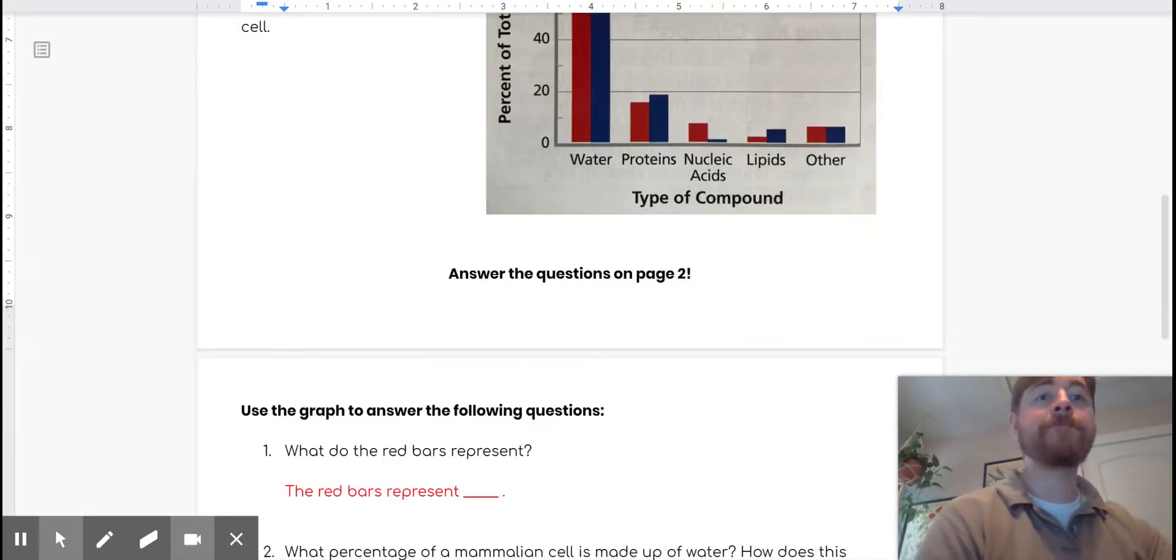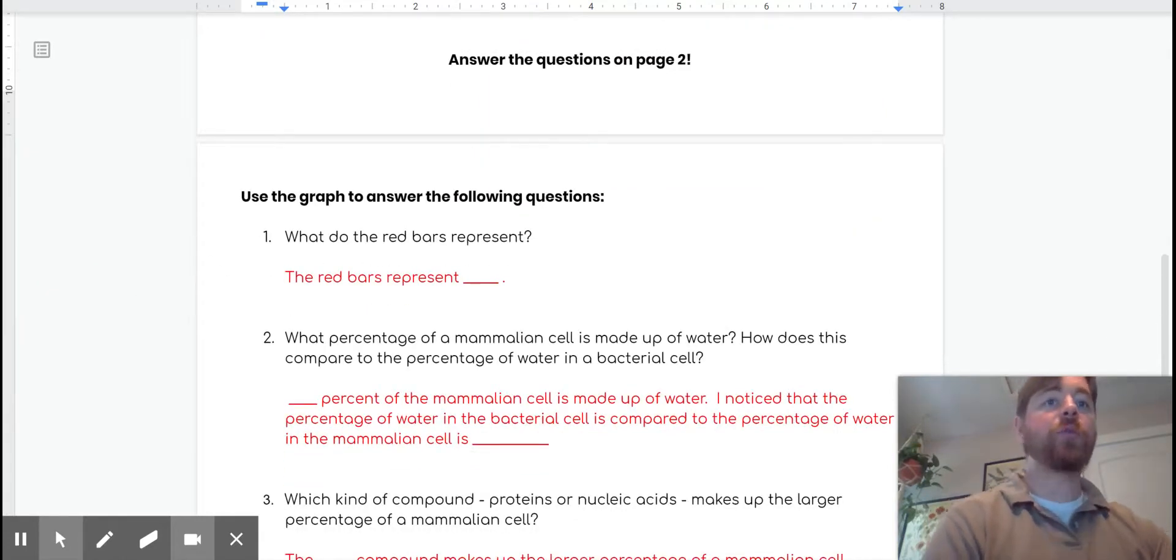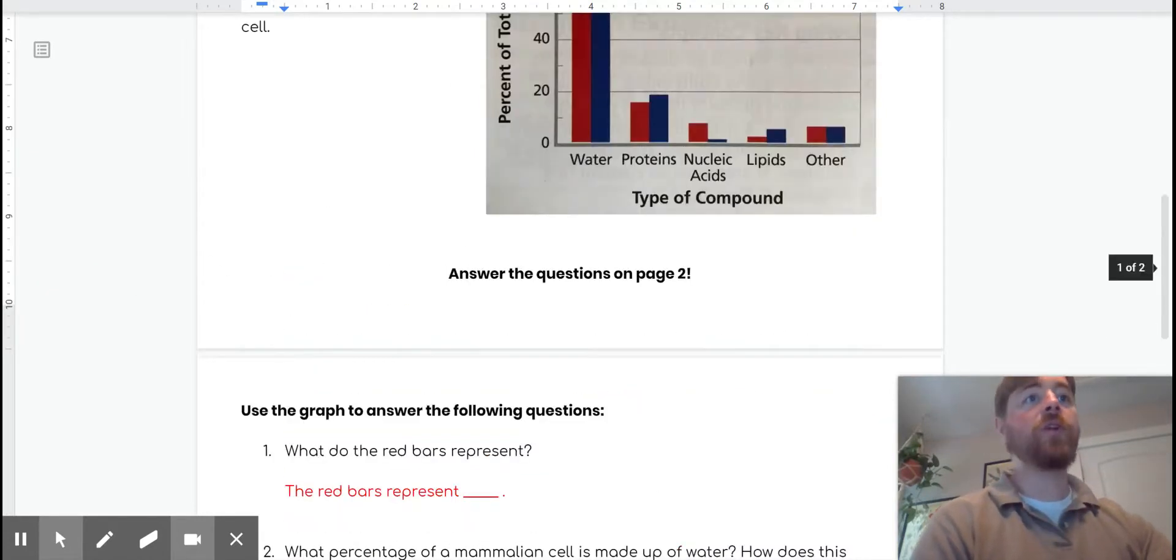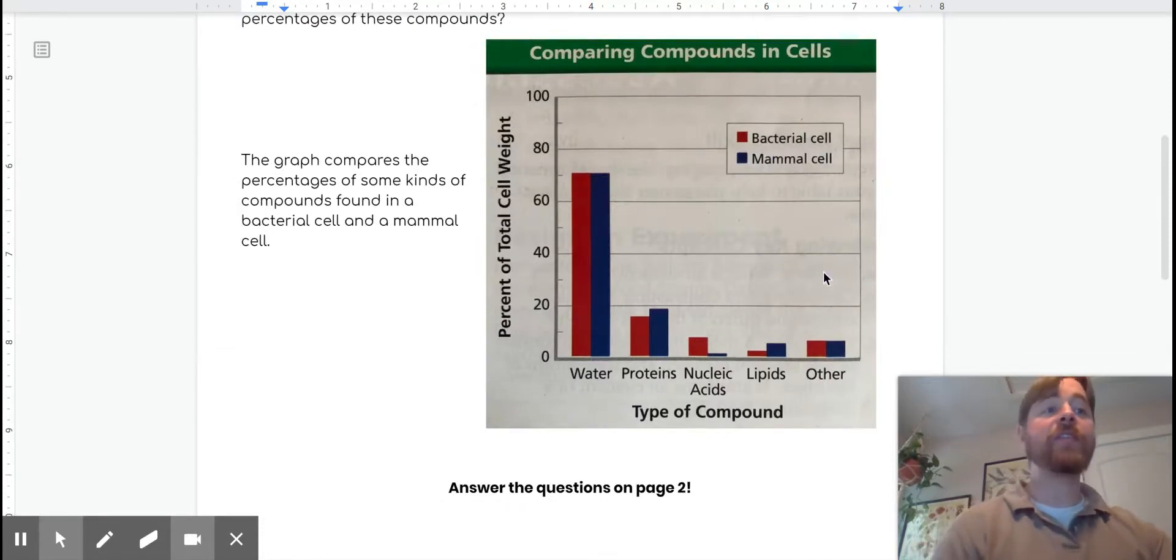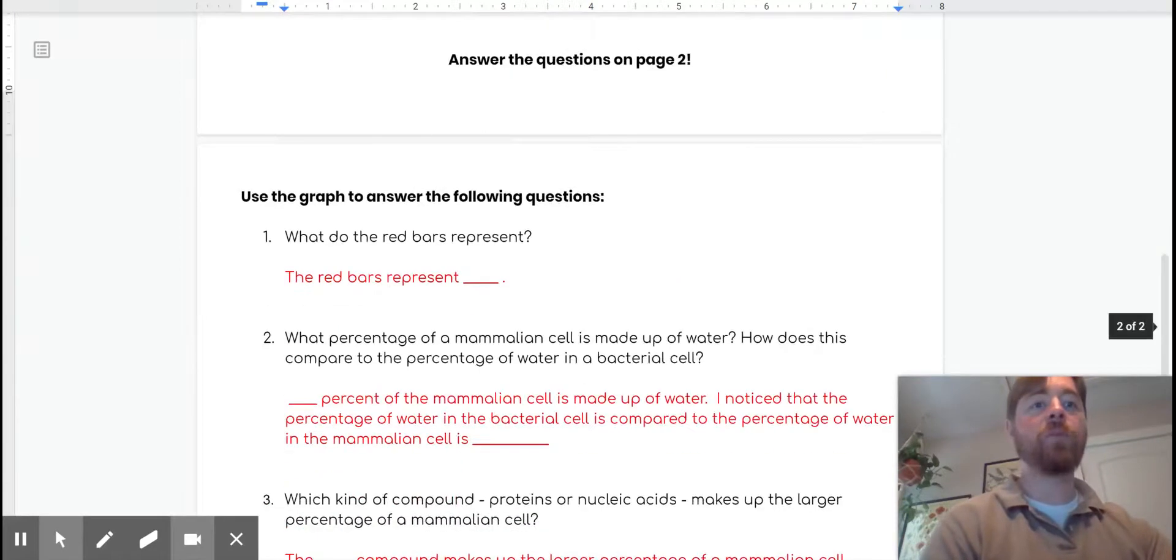All right. Let's get to our questions. Question number one, what do the red bars represent? So in order to answer that question, you don't really need to know anything about cells or cell theory or theories at all. Just come up to your graph and then use your key to explain what the red bars are for, what they represent.